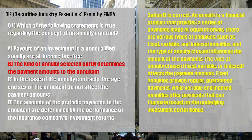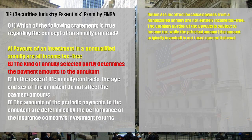The type of annuity chosen — fixed, variable, or indexed — affects the payment amounts. Fixed annuities provide regular, guaranteed payments, while variable and indexed annuities offer payments that can fluctuate based on the underlying investment performance. Option A is incorrect because payouts from a non-qualified annuity are not entirely income tax-free. The earnings portion of the payouts is subject to income tax, while the principal amount originally invested is not taxed upon withdrawal.